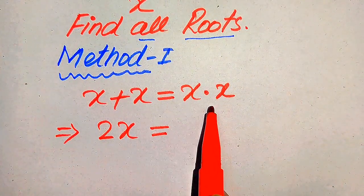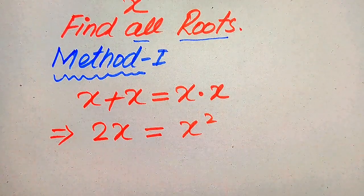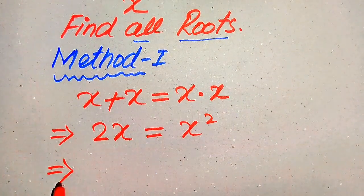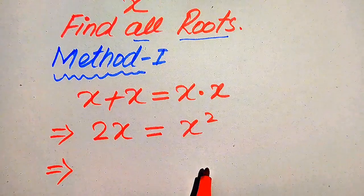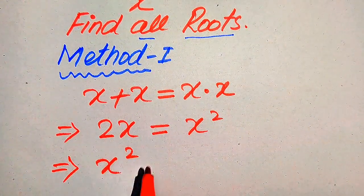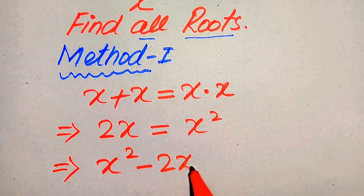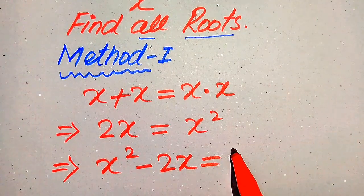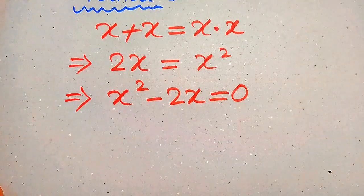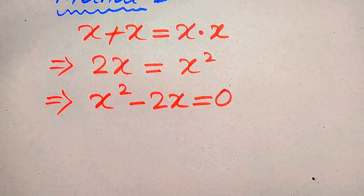So this equals 2 times x, and x times x equals x squared. Now in the next step, we move 2x to the right-hand side, so it becomes x squared minus 2x, and this whole equation equals 0.